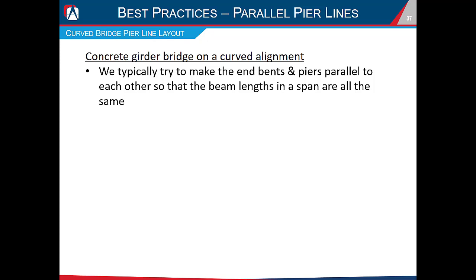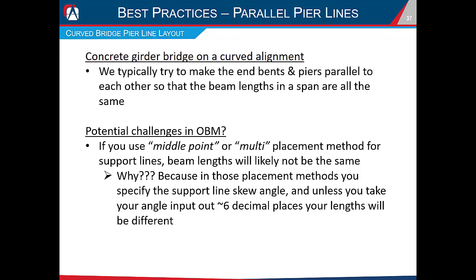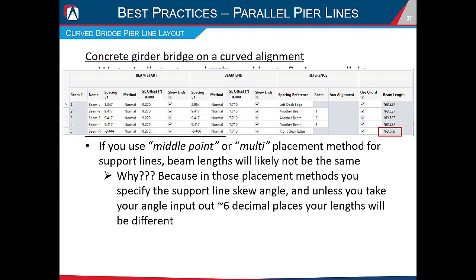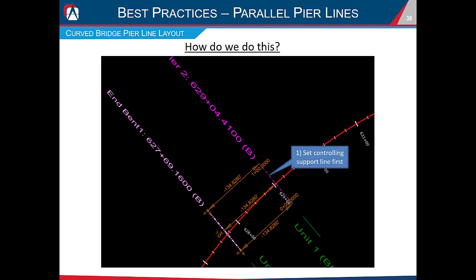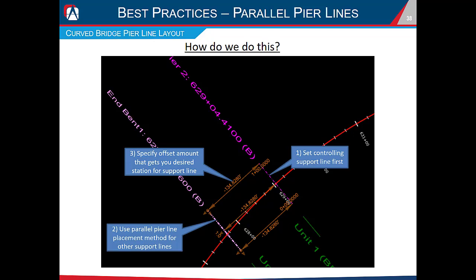Another best practice is using the right tool to lay out support lines on a curved alignment. We typically try to make end bents and piers parallel to each other on curved concrete girder bridges so beam lengths are all the same. Using the midpoint or multi-tool placement methods will likely result in different beam lengths because those methods require specifying a support line skew angle, and unless the angle input is six or more decimal places, your girder lengths will differ. The solution is to use the parallel pier line placement method instead — first set the support line you wish to copy parallel, then specify the offset amount to reach the desired station.